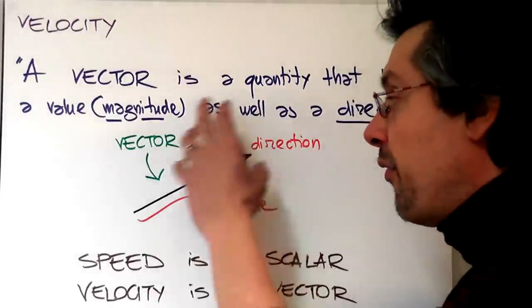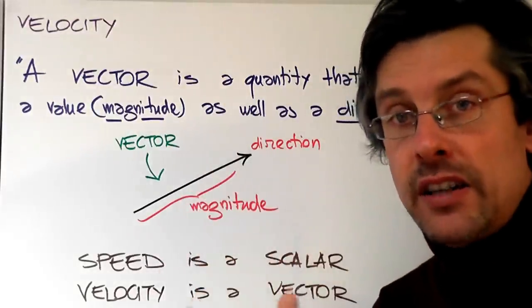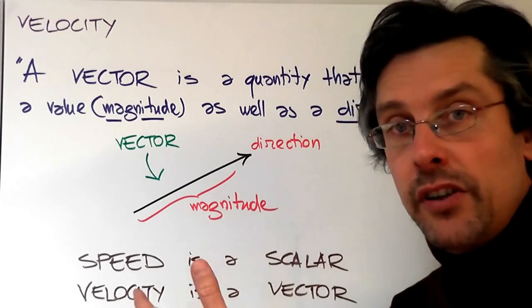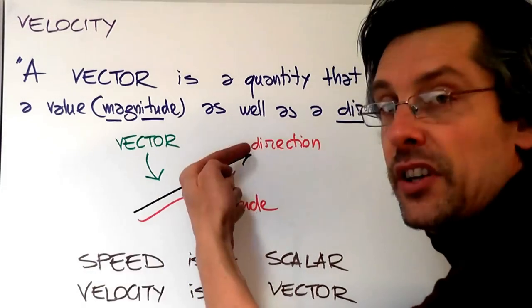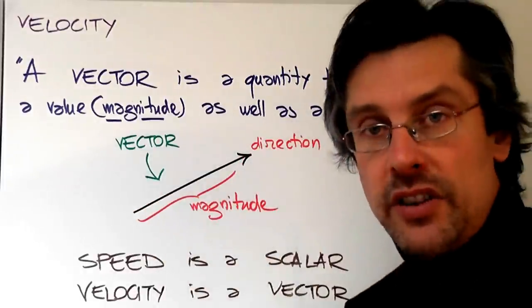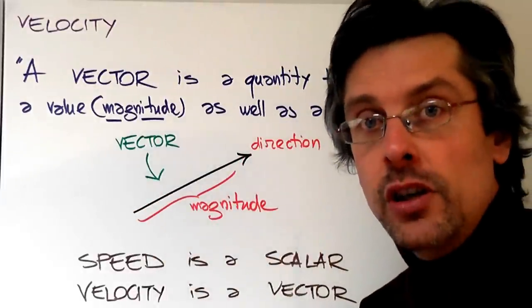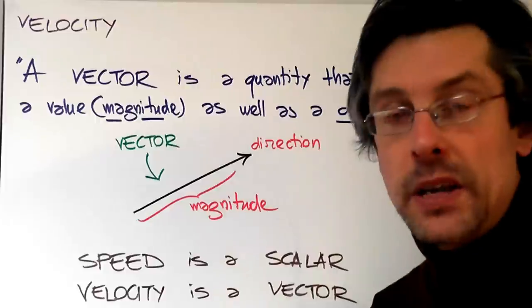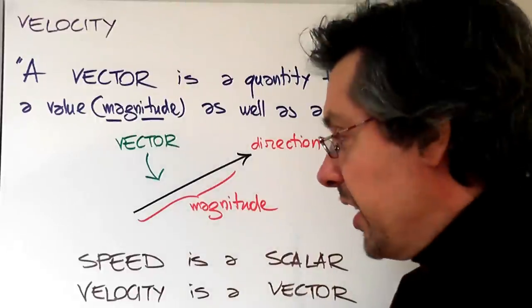So for instance, if you imagine that this is the arrow representing a given velocity, this is the direction of the velocity, and the length of this arrow is a measure of the speed, so how big this velocity is.